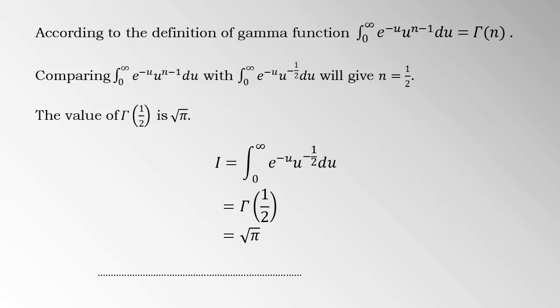Comparing integral 0 to infinity, e raised negative u, u raised n minus 1 du, with integral 0 to infinity, e raised negative u, u raised negative half du will give n equals half. The value of gamma of half is root pi.